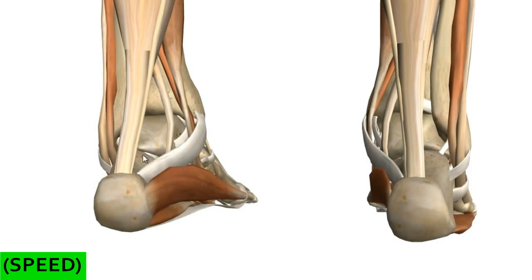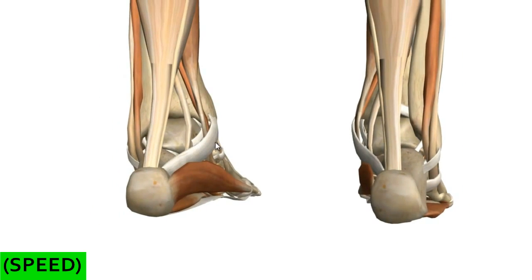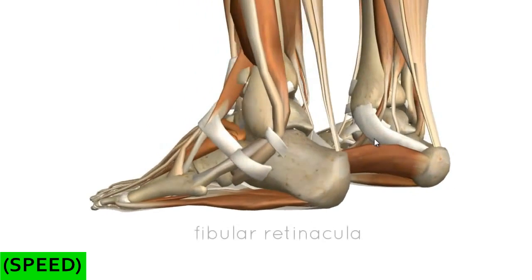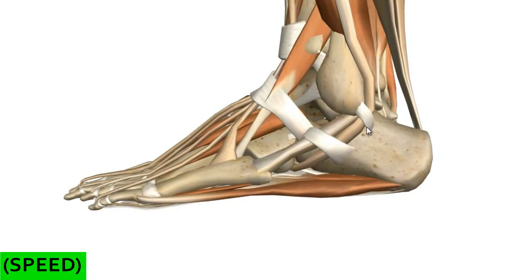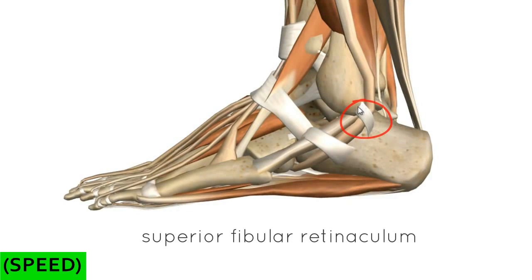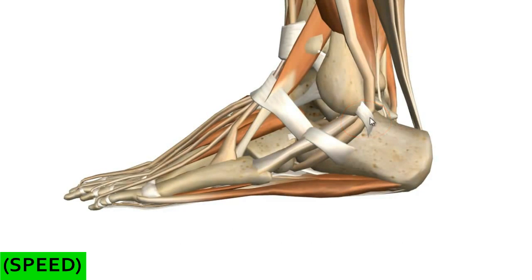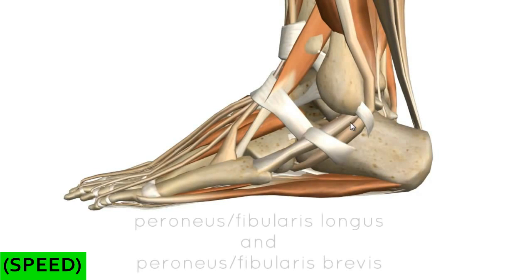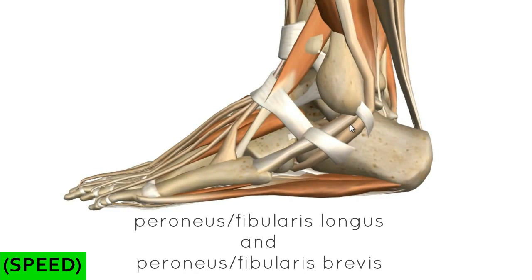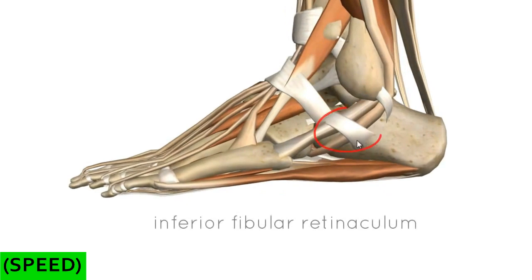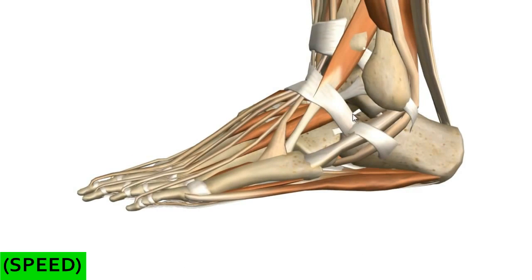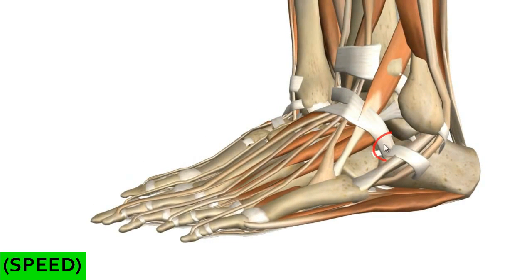Rotating the leg laterally, we can look at the fibular retinacula. You've got a superior fibular retinaculum and an inferior fibular retinaculum. The superior fibular retinaculum attaches to the lateral malleolus and superiorly on the calcaneus. These two retinacula hold the peroneal tendons in place — the tendons of peroneus longus and peroneus brevis, also known as fibularis longus and fibularis brevis. The inferior fibular retinaculum blends with the inferior extensor retinaculum.